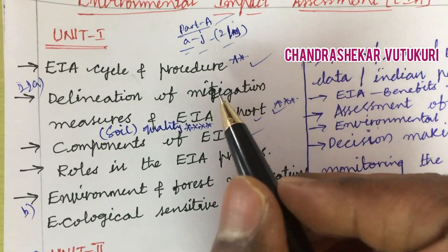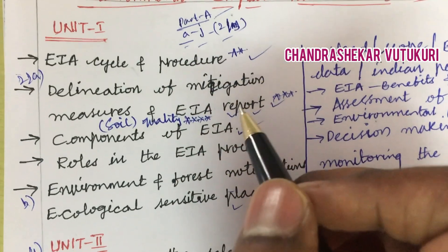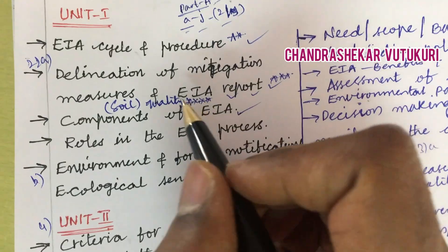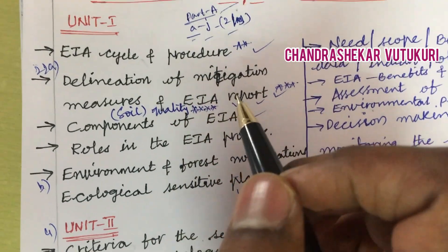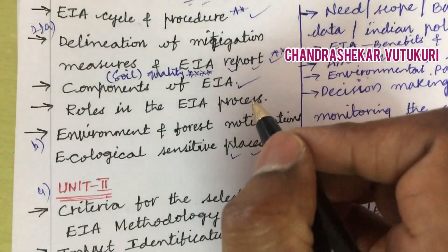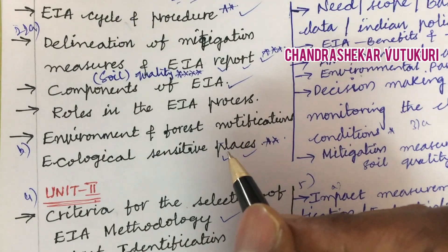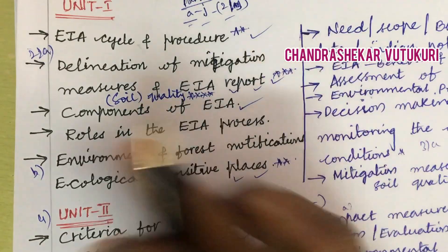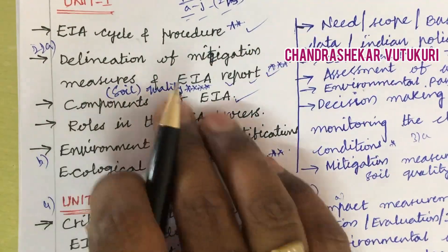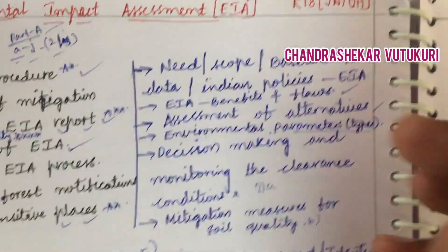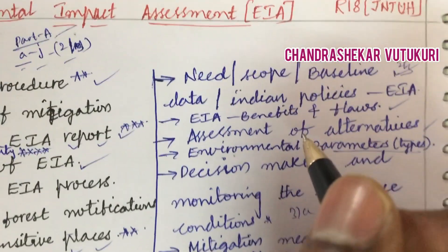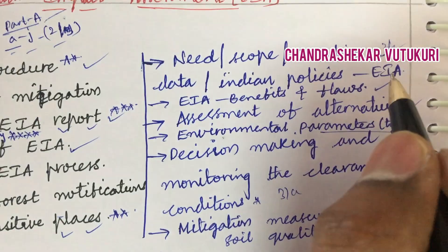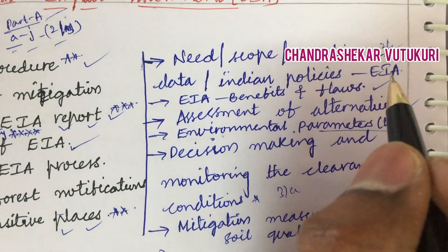The top most questions I can highlight are the EIA cycle, the procedure, the delineation of mitigation measures, and the EIA report for soil quality. The components of EIA, roles in the EIA process, environment and forest notifications, and ecologically sensitive places are also top questions likely to appear in question 2A. Short questions may include explaining the need of EIA, scope, baseline data, and Indian policies of EIA.